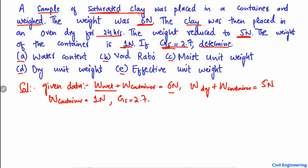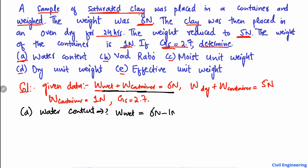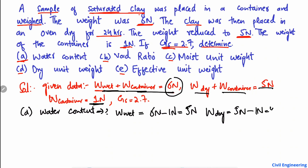First, we find out the water content. To do this, we need the wet weight and dry weight of the soil without the container. The wet weight of the soil without the container equals 6 Newton minus 1 Newton, which gives 5 Newton — because 6 Newton is the weight of the container plus soil, so we subtract the container weight. Similarly, the dry weight of the soil equals 5 Newton minus 1 Newton, which gives 4 Newton.